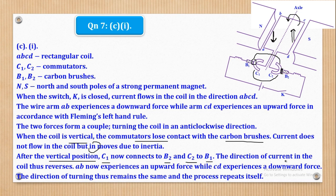The direction of current in the coil thus reverses. So the direction reverses. AB now experiences an upward force while CD experiences a downward force. Remember, it has changed. Now this part is now this side and this AB is now the other side. That is why AB experiences an upward force now and CD experiences a downward force now. So the direction of turning thus remains the same. So the direction remains the same and the process repeats itself. So note that why the direction of turning is the same and the direction of the current reverses.